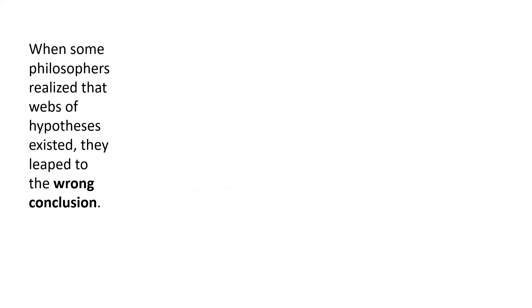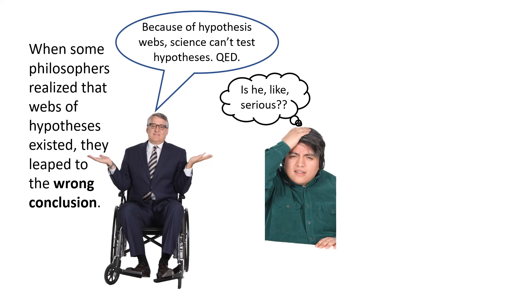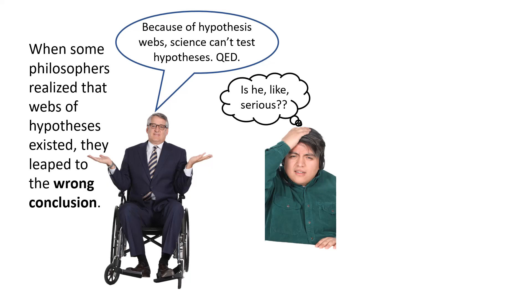Now when some philosophers realize that the web of hypotheses existed, they leap to the wrong conclusion. So here is our philosopher, and he concludes that because of hypothesis webs, science can't test hypotheses. Now this is completely baffling to a great many scientists, because scientists have been testing hypotheses all the time, provisionally but successfully. The question is, how do they do this in the face of the web of hypotheses?